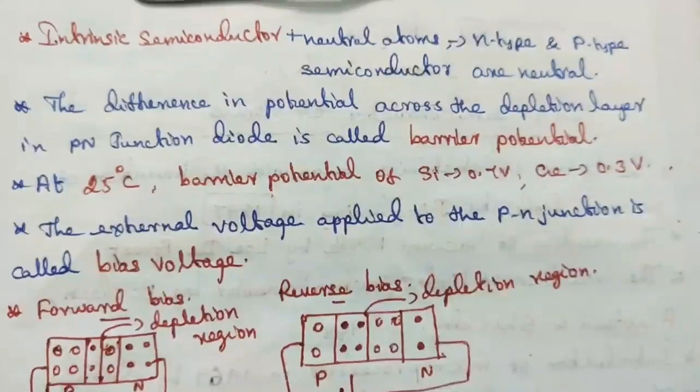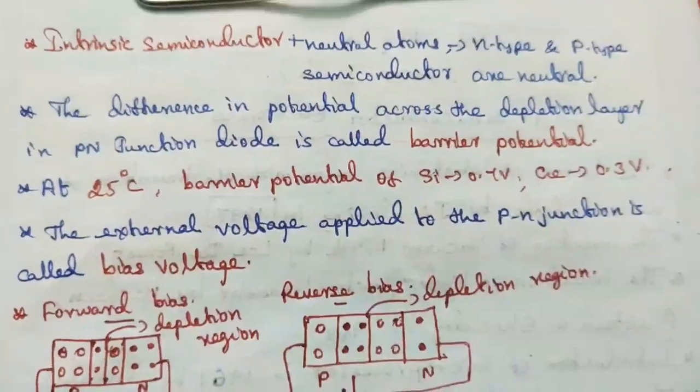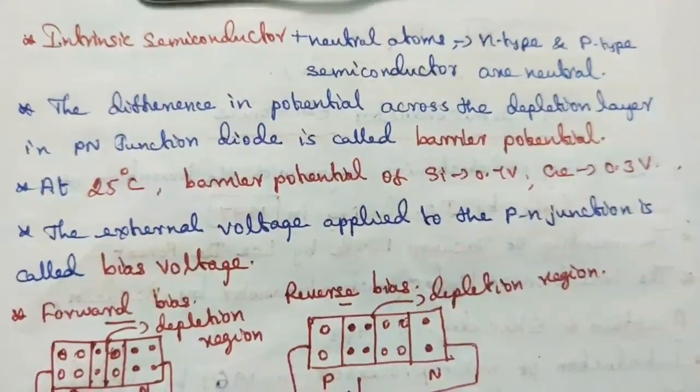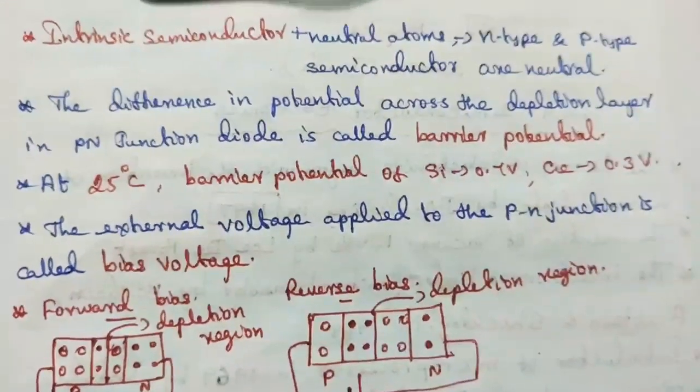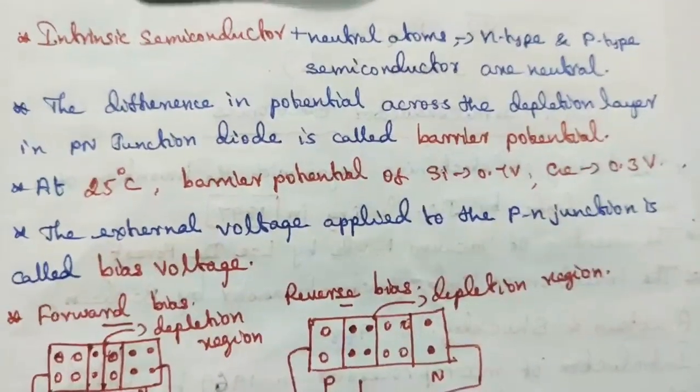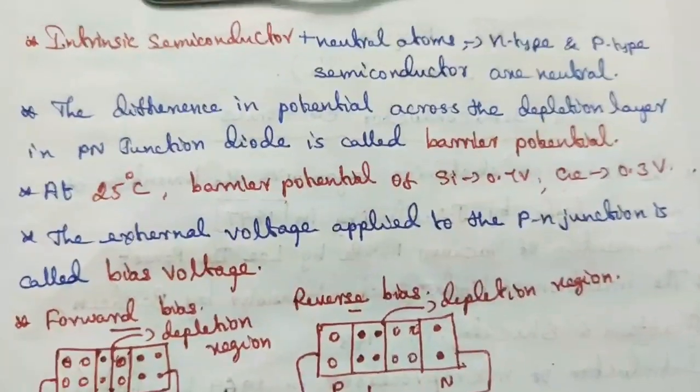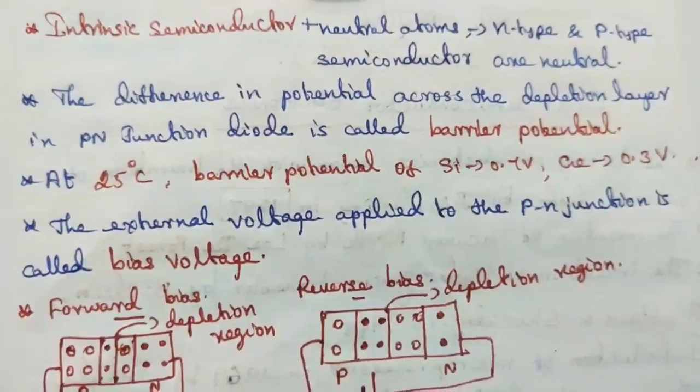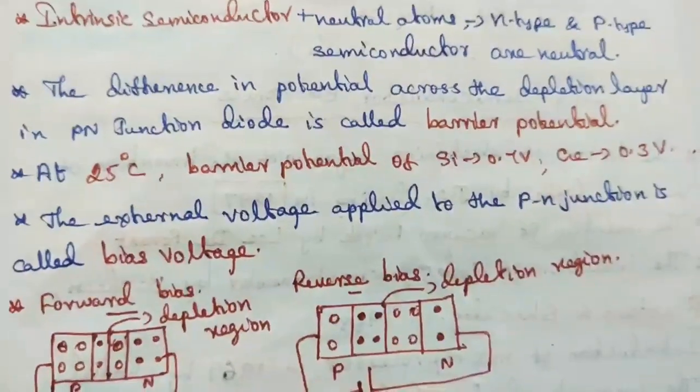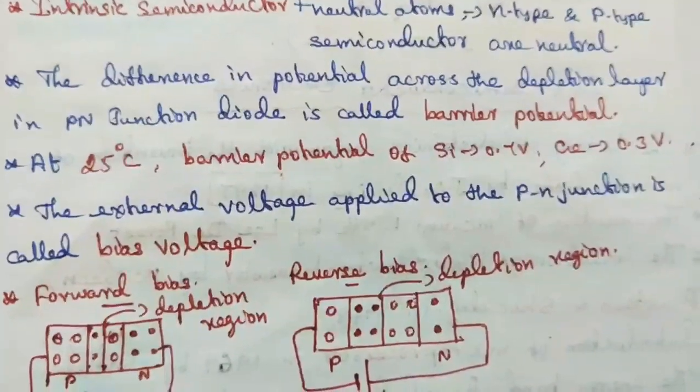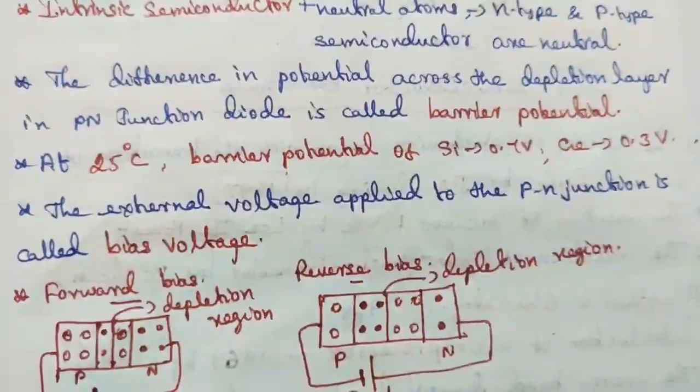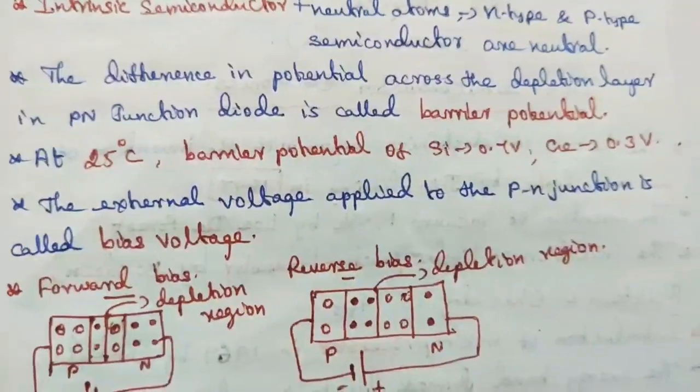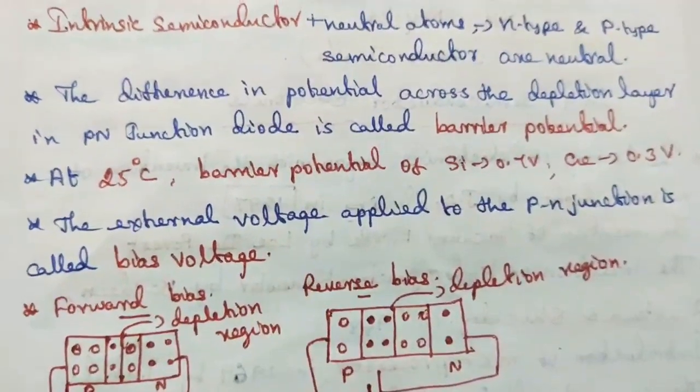The difference in potential across the depletion layer in p-n junction diode is called barrier potential. The depletion layer is an immobile region. At 25 degrees Celsius, barrier potential of silicon is 0.7 volt and germanium is 0.3 volt. The external voltage applied to the p-n junction is called bias voltage.